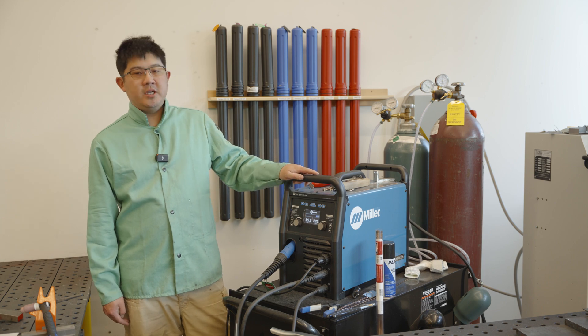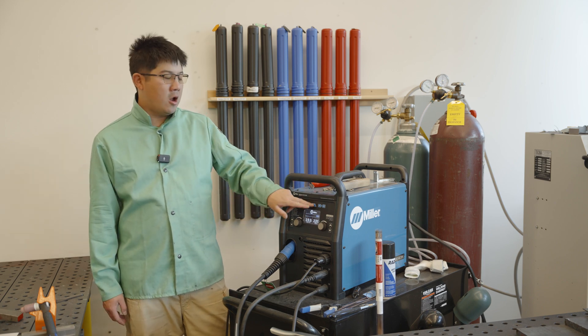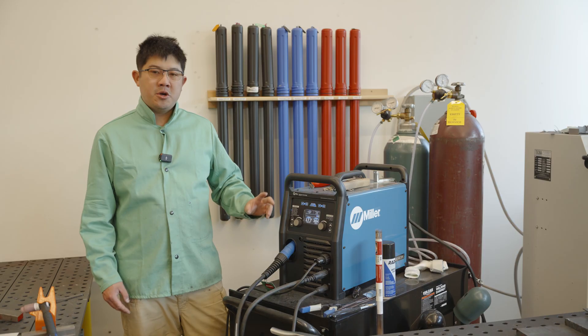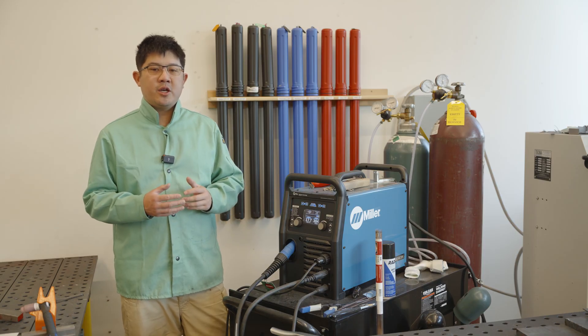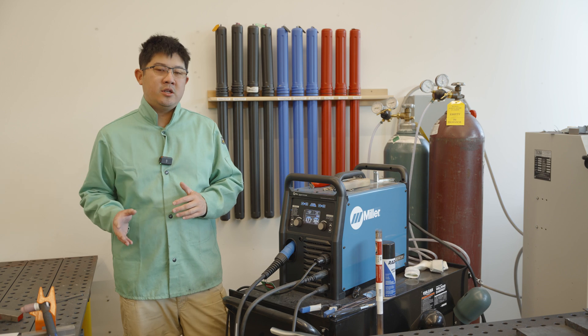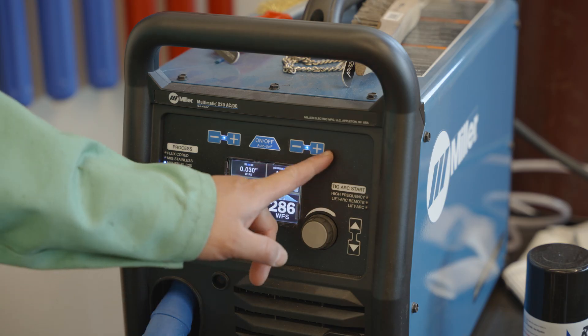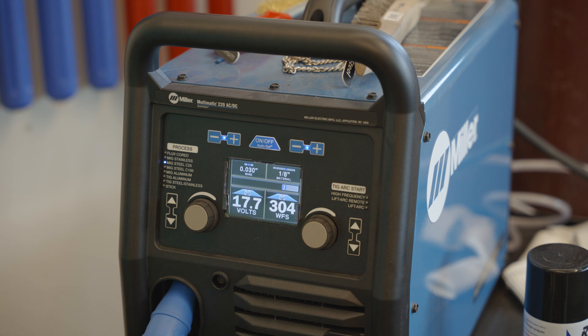The cool thing about these machines is that if you're new to welding, they have something called the Auto Set feature. You click this top middle button right there, and this puts you into a mode where you simply select the material thickness you're welding, and the machine does all the settings for you. So today, we're going to be welding eighth-inch steel, so we're just going to make sure we select eighth-inch steel. Once we do that, it's going to give our settings, and you should be able to start welding.